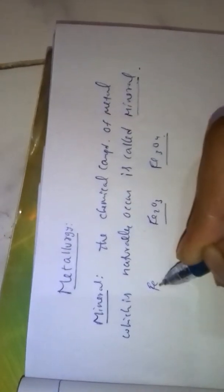Metallurgy — first, the mineral. The chemical compound of metal which naturally occurs is called a mineral. For example, iron naturally occurs as Fe2O3 and Fe3O4, so these are minerals of iron ore.